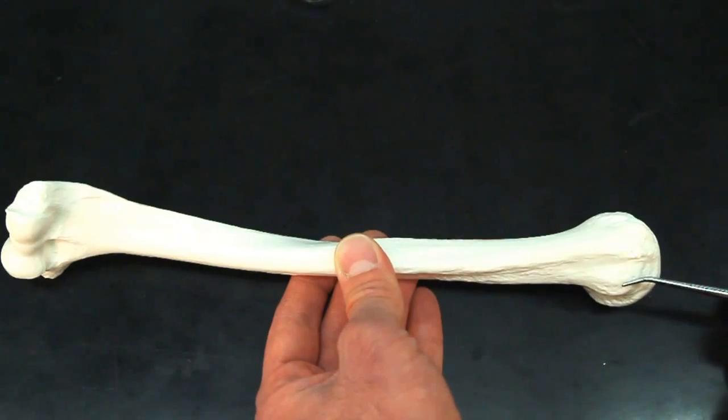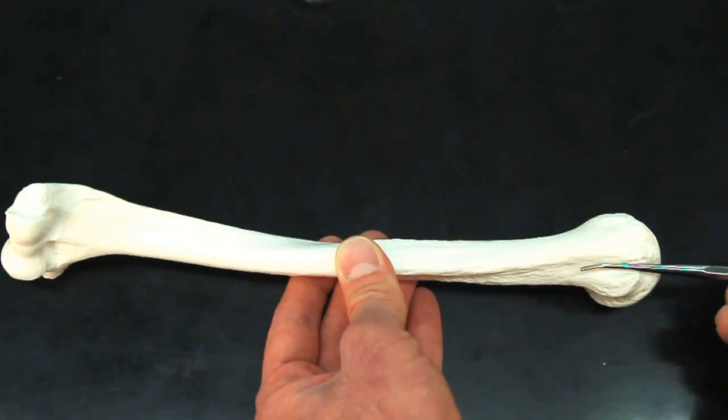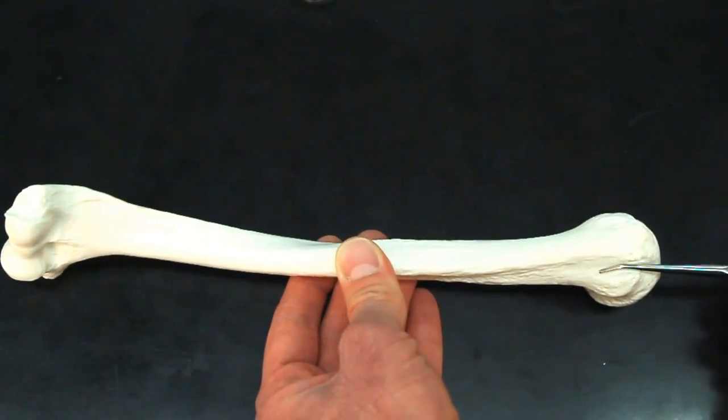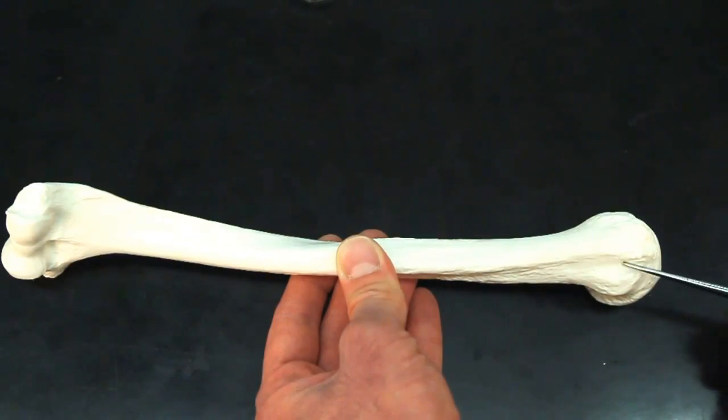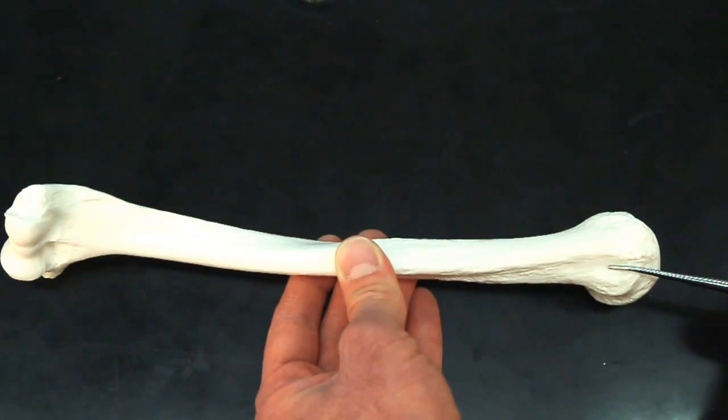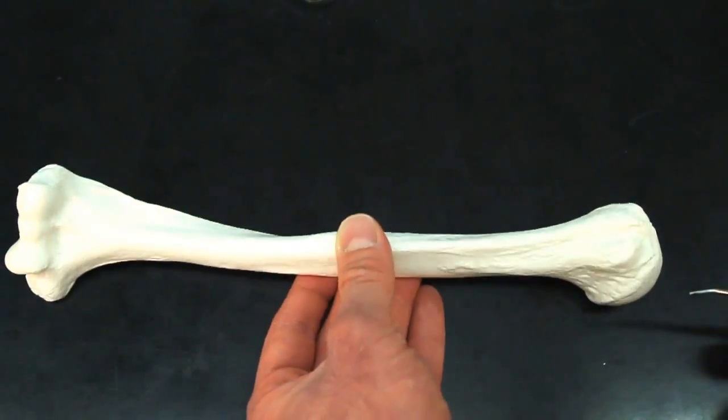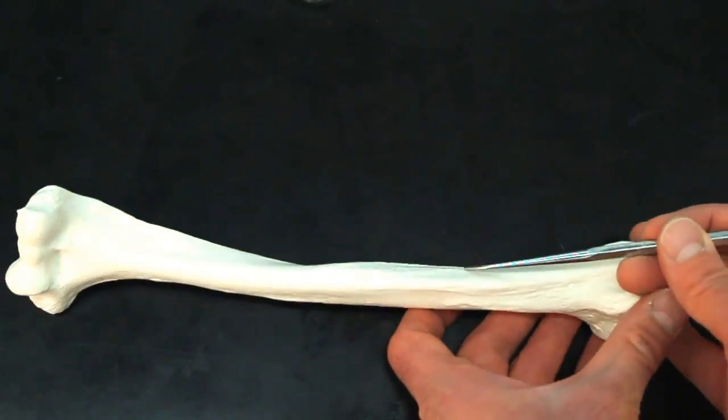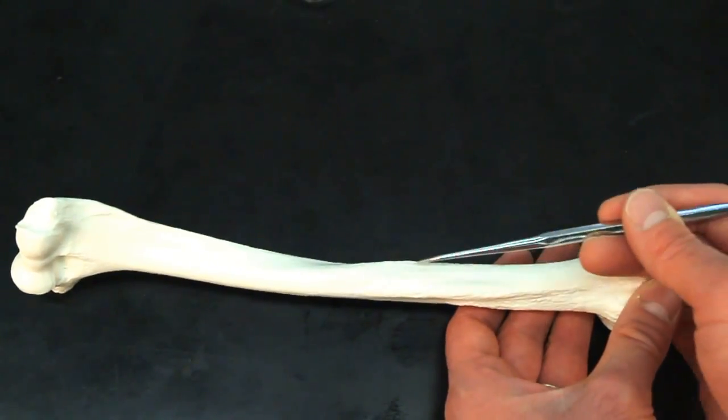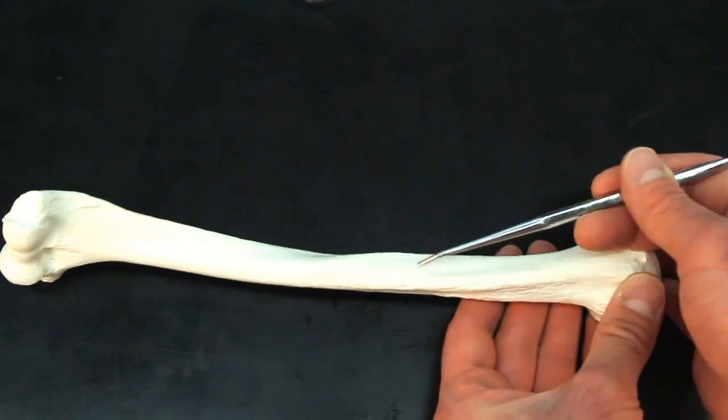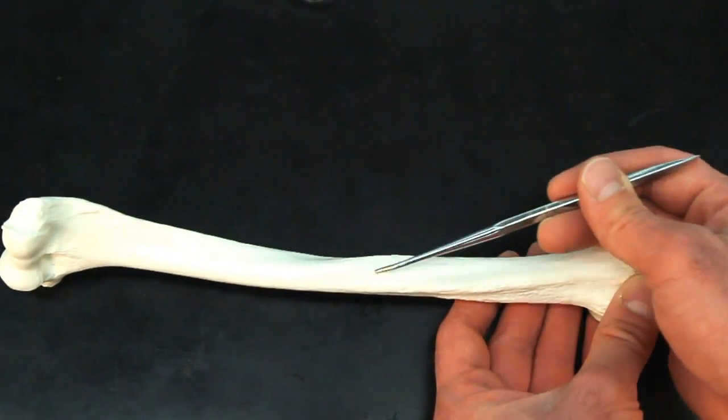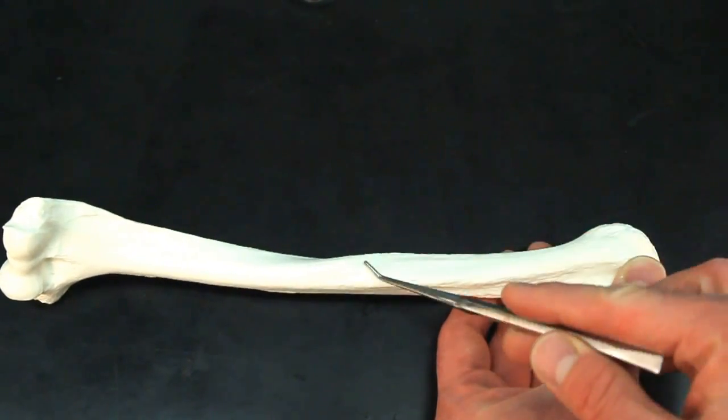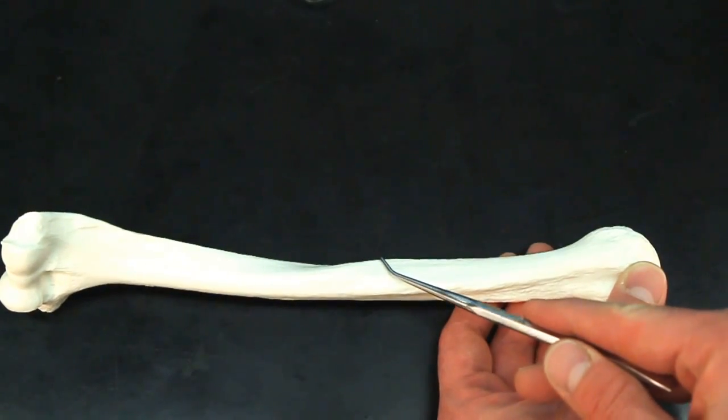Now, in between the two tubercles, there's this indent. There's this groove right here. That groove is known as the intertubercular groove. And if you follow that intertubercular groove down, you're going to find a rough patch about a third to halfway down the shaft of the bone. This rough patch is going to be the deltoid tuberosity.